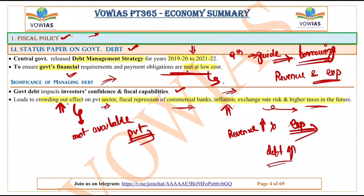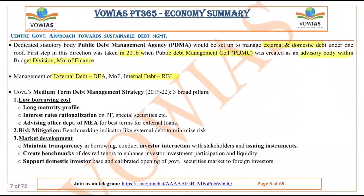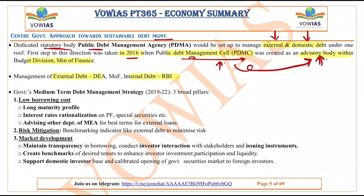Managing the debt is very important, so the government follows a sustainable debt management approach. There is an idea to set up a Public Debt Management Agency — a dedicated statutory body — but it has not been set up yet. It will manage both external debt (debt taken from international institutions or other countries) and domestic debt under one roof. The first step was taken in 2016 when a Public Debt Management Cell was created as an advisory body within the budget division of the Ministry of Finance. Currently, external debt is managed by the DEA under the Ministry of Finance, and internal debt is managed by the RBI.